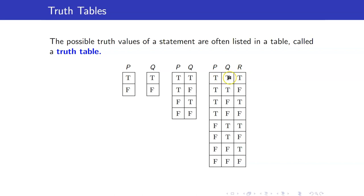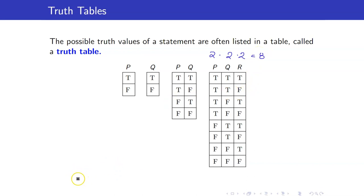Why is that? Using the fundamental principle of counting, if you have three variables, P has two choices — true or false — Q has two choices, and R also has two choices. So therefore you have two times two times two, which is eight. In general, if you have n propositions, you should have two to the n rows. That will tell you the number of possibilities.